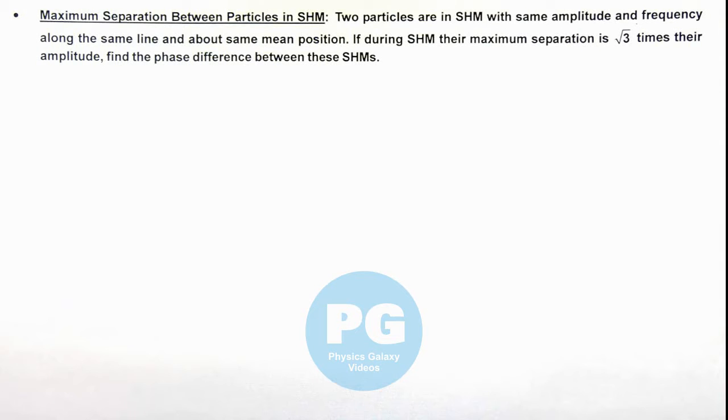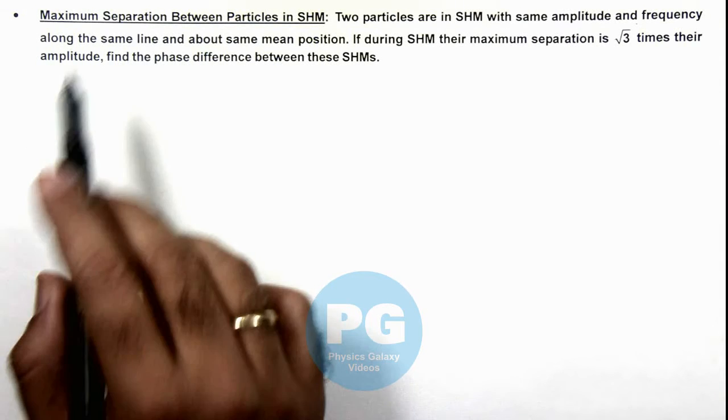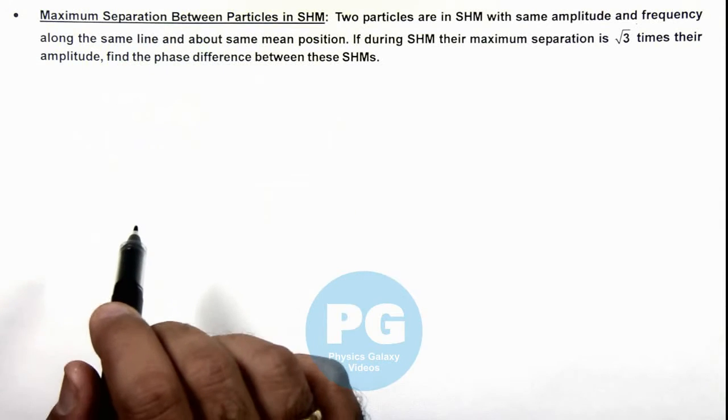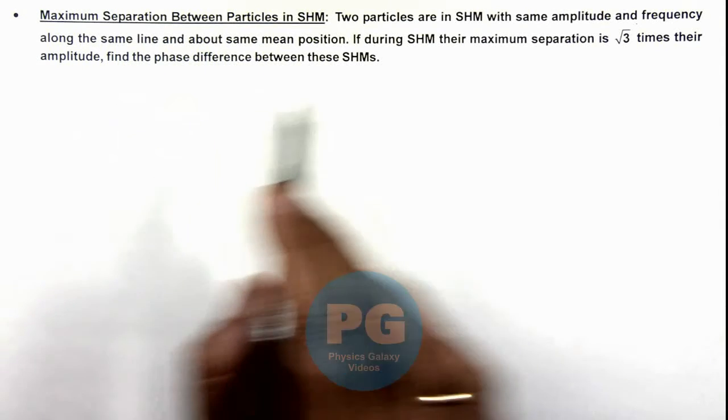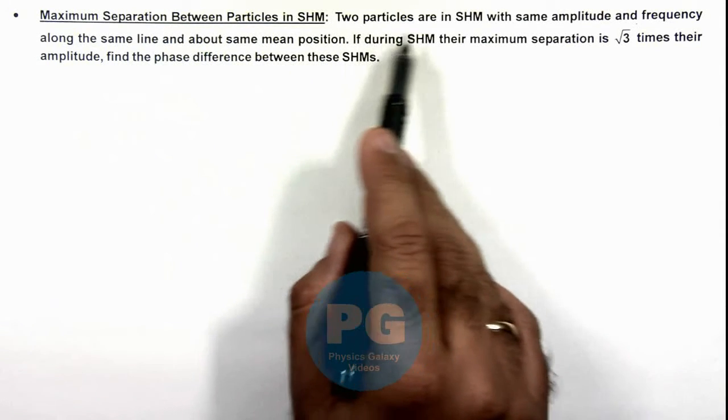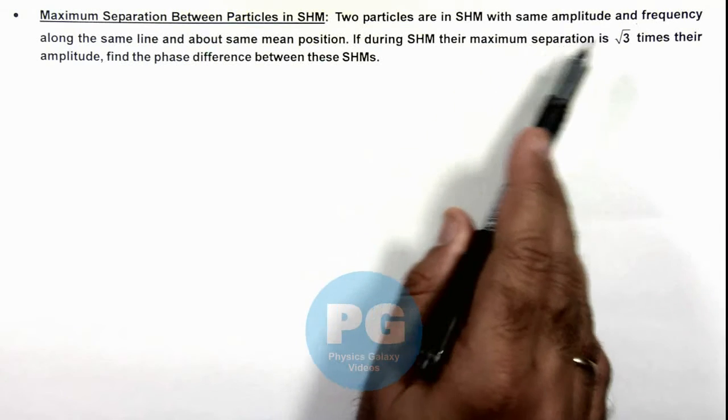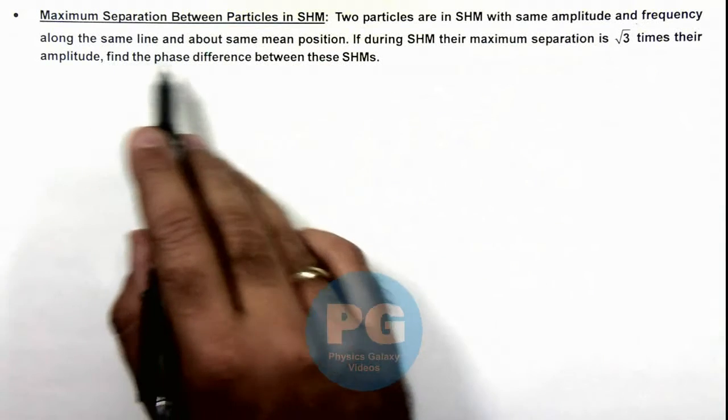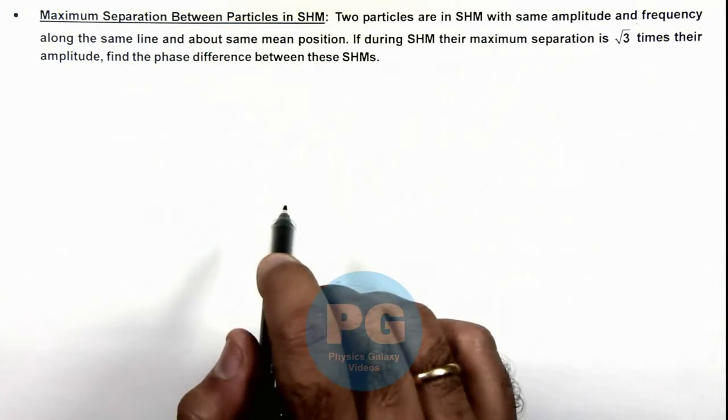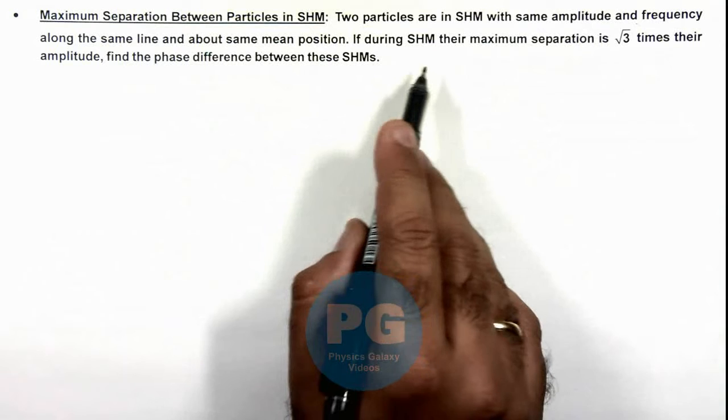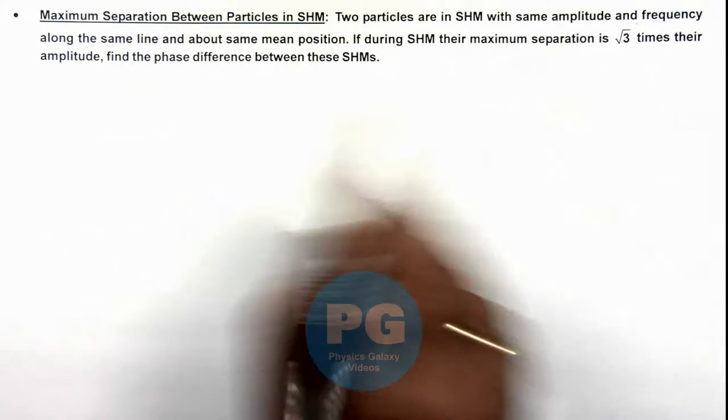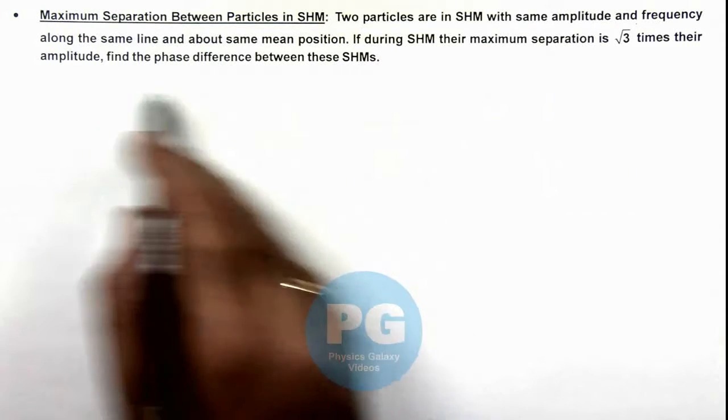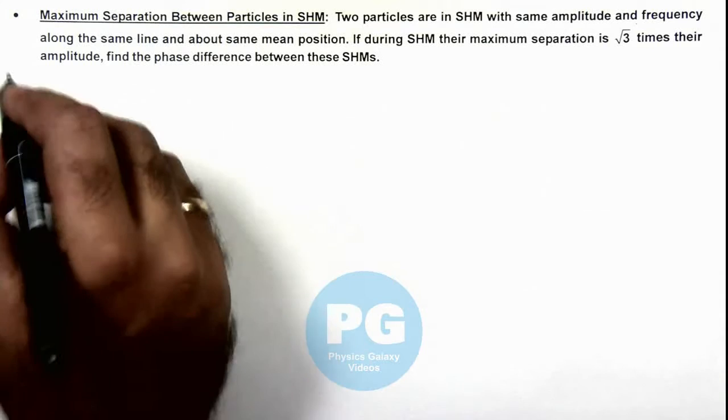In this illustration, we'll discuss maximum separation between particles in SHM. Here, we are given that two particles are in SHM with same amplitude and frequency along the same line and about same mean position. If during SHM their maximum separation is root 3 times their amplitude, we are required to find the phase difference between these SHMs.